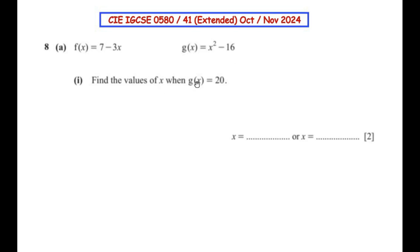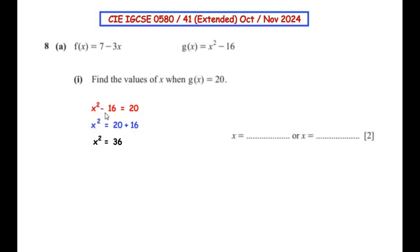Find the values of x when g(x) is equal to 20. Two functions are given: f(x) and g(x). In the first part they have asked us to find the values of x if g(x) equals 20. So we consider the function g(x) and plug in the value 20, giving us x squared minus 16 is equal to 20.